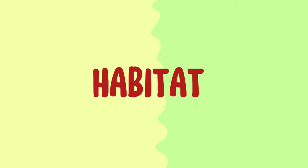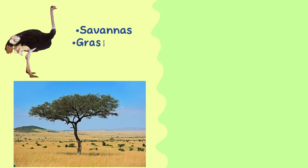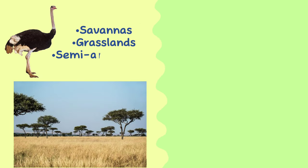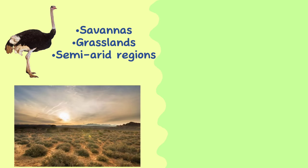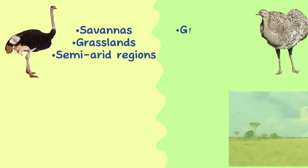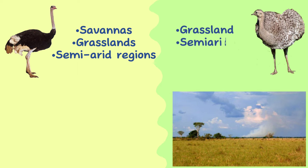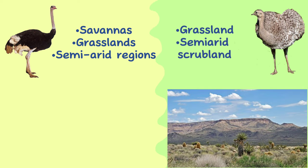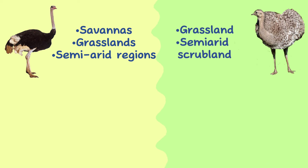Habitat. Ostriches live primarily in savannas, grasslands, and semi-arid regions. Rheas live in grassland and semi-arid scrubland, and during the breeding season, they stay near rivers, lakes, or marshes.